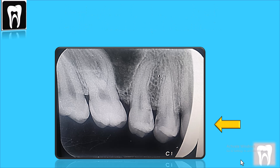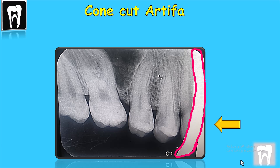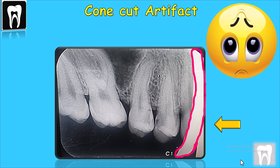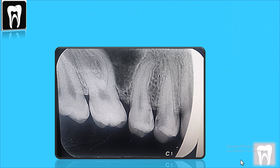Starting from the mesial, we have this cone-cut artifact, and then we have these radiolucencies right here in the canine and on the mesial and distal of the first premolar and in the distal of the second premolar.